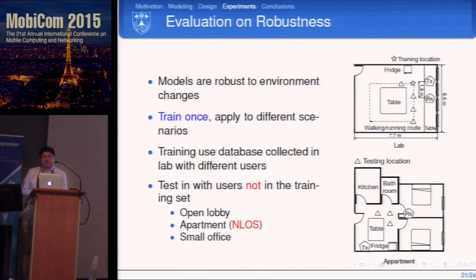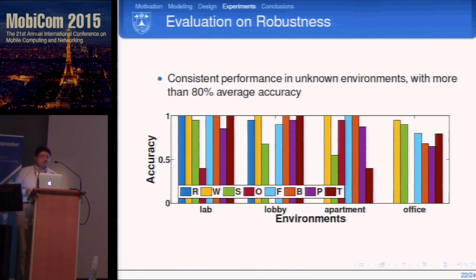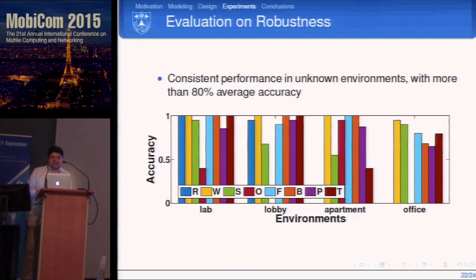Our system is quite robust. We only need training data collected at one specific place and can apply the model to a new environment the system has never seen before. Experiments across different environments — open lobby, apartments, and small offices — using training data from our lab achieved more than 80% accuracy, demonstrating good robustness of the CSI model.